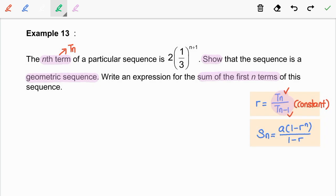Now, we are going to identify the values of a and r in order to write an expression for the sum of the first n terms. From the previous part, we know that r is equal to 1 over 3.